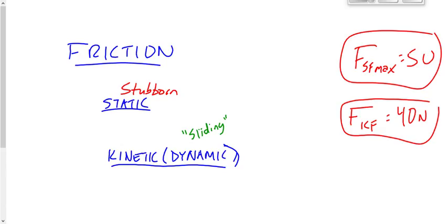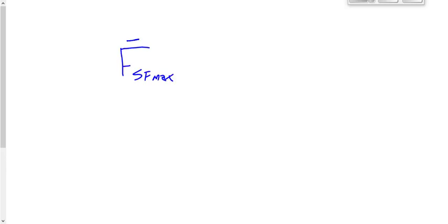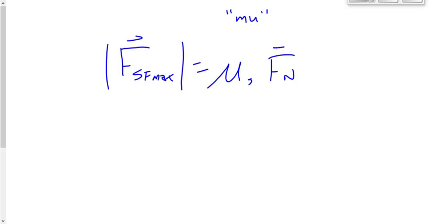We learned an equation on Thursday that described not the force of static friction, but the maximum force of static friction. We learned that it was mu — a Greek letter mu, written like a U and an M combined — times the normal force. This value, mu, is called the coefficient of friction, and it's basically just a measure of how much the two materials stick together. Which would have a higher coefficient of friction: rubber and ice, or rubber and pavement? Rubber and pavement, because they stick together better.